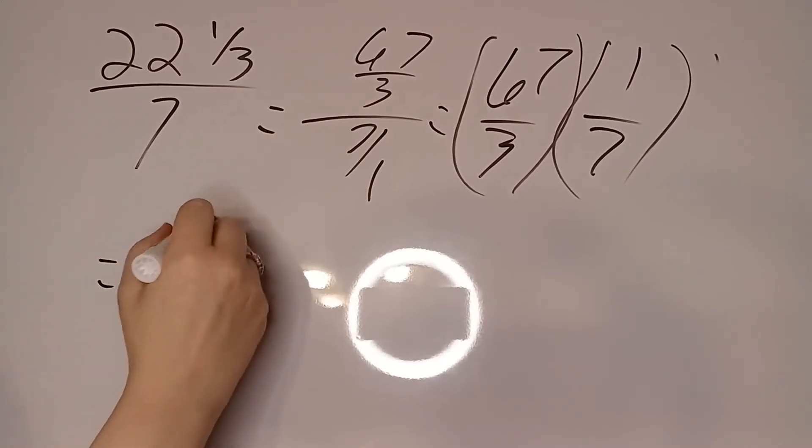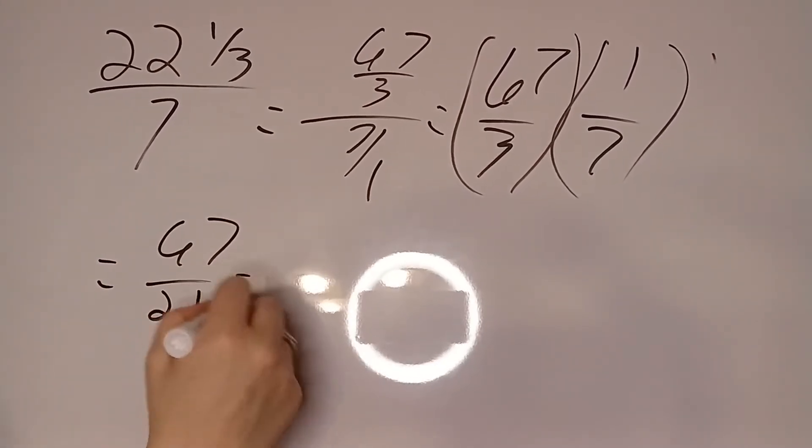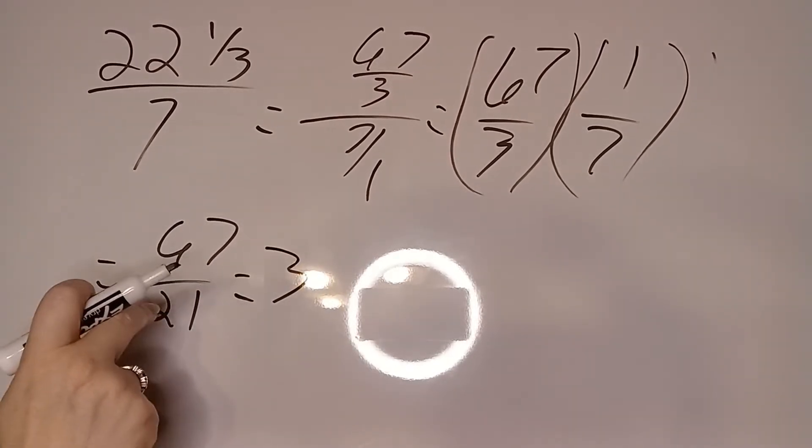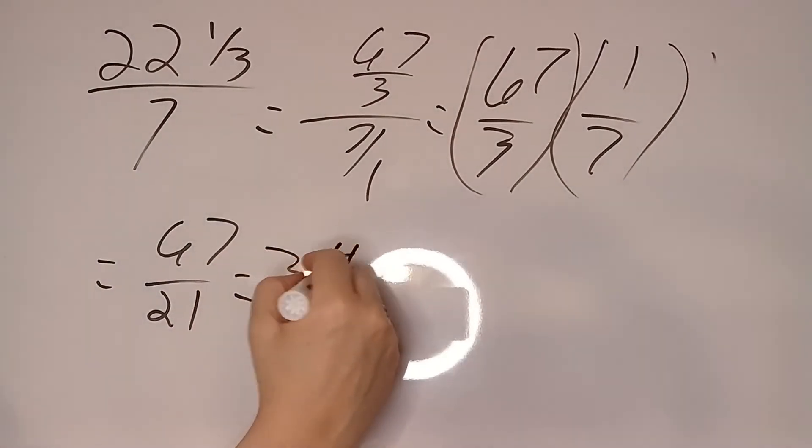So we get 67 over 21. And then we have to simplify. So that is 3 and 4 twenty-firsts.